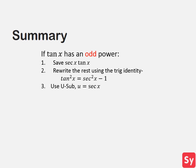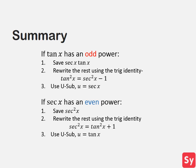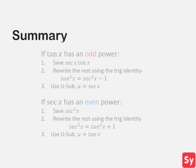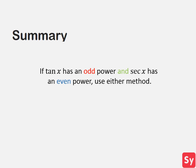So we've seen how to solve these problems and seen their examples, but let's go through a summary one more time. If tangent of x has an odd power, we save a factor of secant of x times tangent of x, then rewrite the rest in terms of secant of x, and use u-substitution setting u equal to secant of x. If secant of x has an even power, we save a factor of secant squared of x, rewrite the rest in terms of tangent of x, and use u-substitution setting u equal to tangent of x. However, if tangent of x has an odd power and secant of x has an even power, then you can use either method to solve the integral.